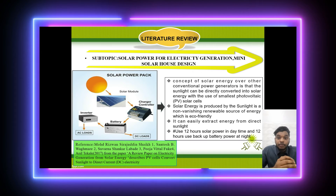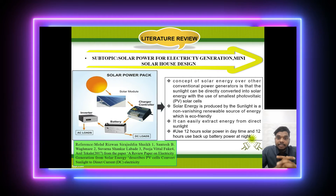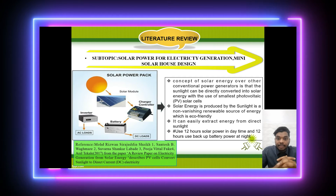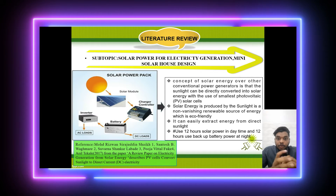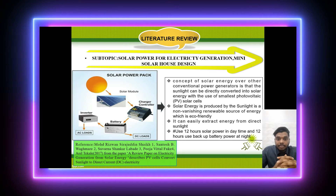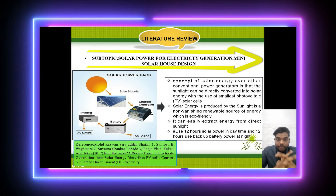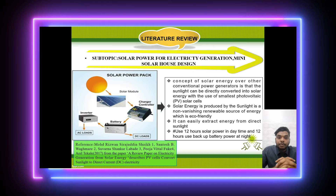This slide is about power generation. The idea is to generate solar energy instead of using other types of power. With the use of thin-film photovoltaic (PV) solar cells, sunlight can be directly transformed into solar energy. Sunlight generates solar energy which is sustainable, not depleting, and environmentally friendly. There is no electricity bill to pay. We plan to use 12 hours of solar power during daytime and 12 hours of backup power at night.